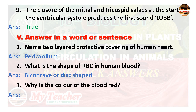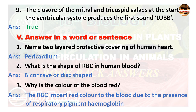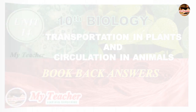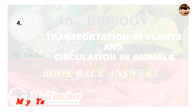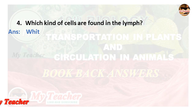Third: Why is the colour of blood red? Answer: RBC impart red colour to the blood due to the presence of the respiratory pigment haemoglobin. Fourth: Which kind of cells are found in the lymph? Answer: White blood cells.